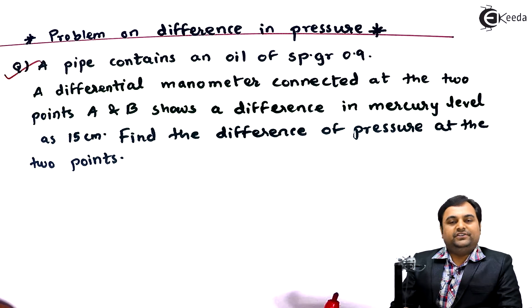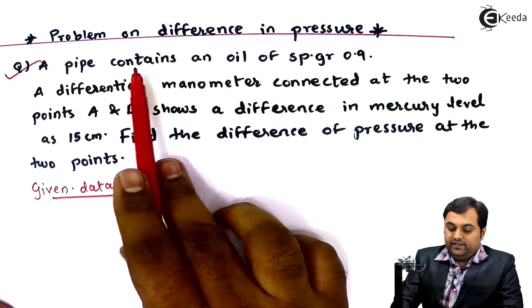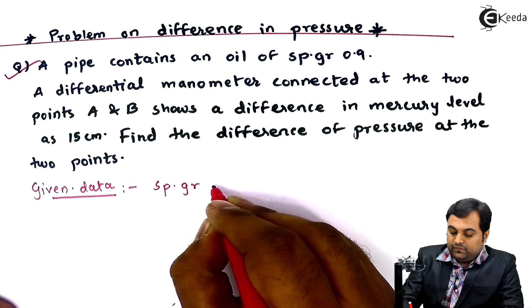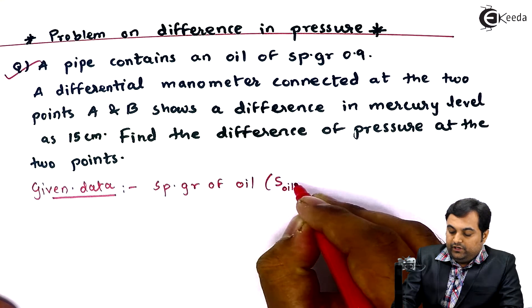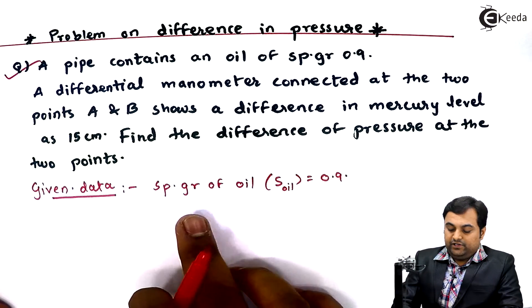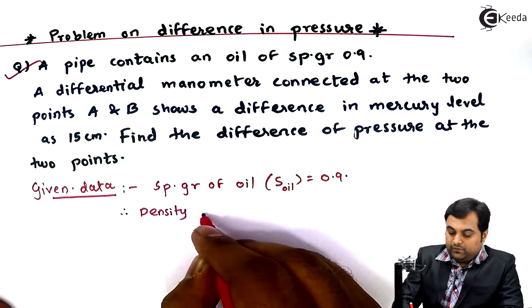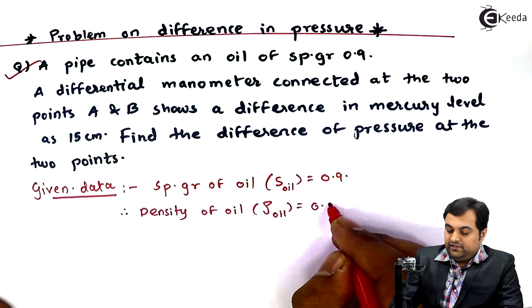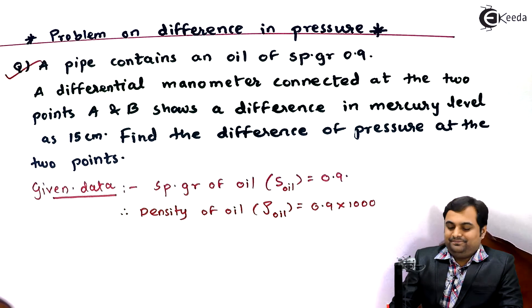Writing the given data: a pipe contains an oil of specific gravity 0.9, so the specific gravity of oil is 0.9. Once we know the specific gravity of oil, we can calculate the density of oil. Density of oil equals specific gravity multiplied by density of water, which is 1000 kg/m³.